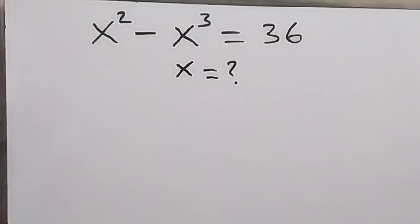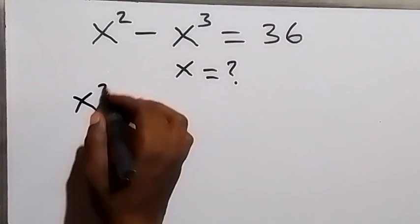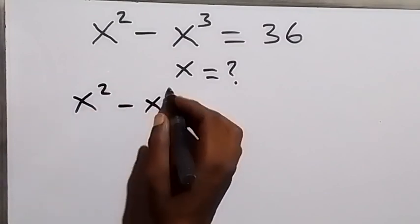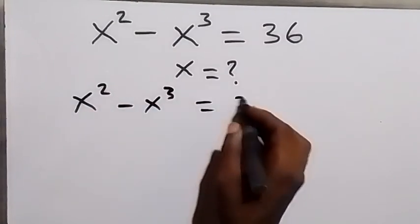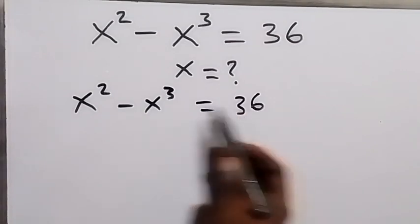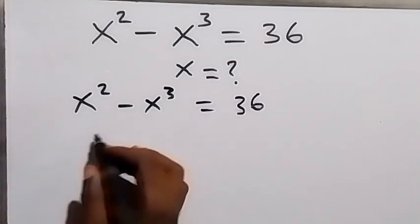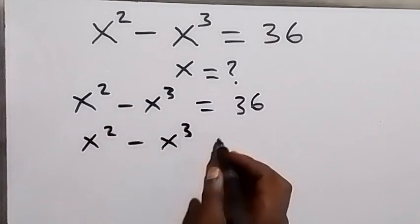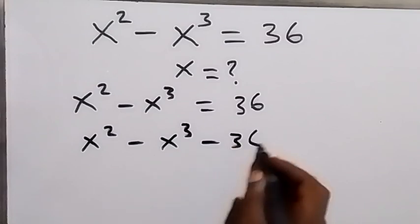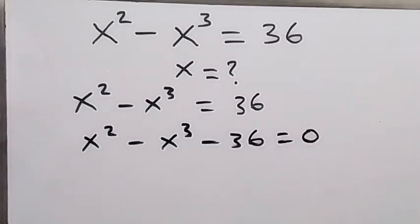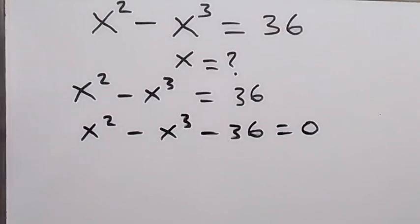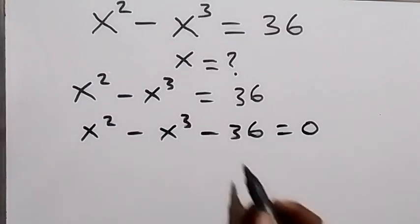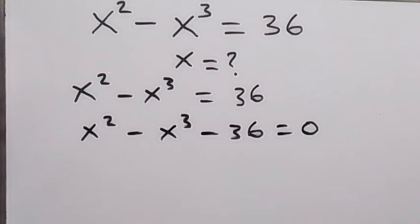Hello, you are welcome. How to solve this nice algebra equation — finding the value of x. Here we are given x squared minus x cubed equals 36. From here, let's take 36 to this side, and this becomes x squared minus x cubed minus 36 equals 0.